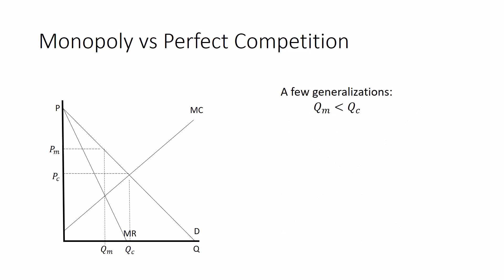The monopolist quantity will be less than the competitive quantity. The monopolist price will be more than the competitive price. The monopolist profit will be more than the competitive profit. And these lessons will always be true, as long as the demand curve isn't flat. If it's flat, they'll all be the same.